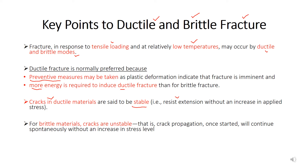If you do not increase the applied stress, the cracks will not propagate. For brittle materials, cracks are unstable — once crack propagation starts you do not get sufficient time to observe further propagation. Once the crack is initiated and starts to propagate, it will fail suddenly. In ductile fracture, we can take preventive measures by observing the plastic deformation, which is why ductile fracture is preferred over brittle fracture.